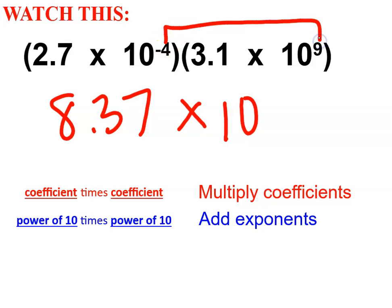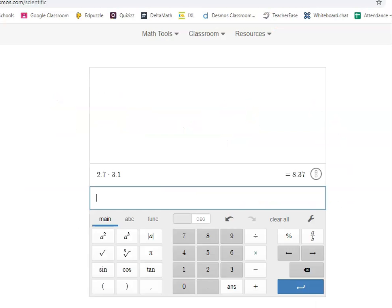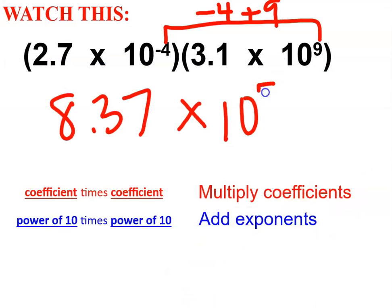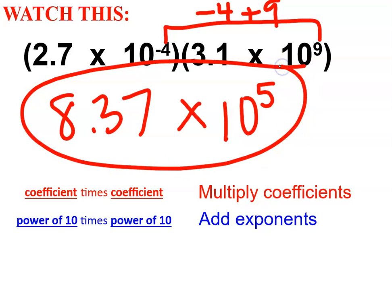Now this part can be tricky for some of you. When you are adding signed numbers, or positive and negative numbers, some of you have some trouble. So, just use your calculator. Negative 4 plus 9. On the Desmos calculator, the negative sign is the subtraction button. Negative 4 plus 9. No need to hurt your brain. Just use a calculator. The answer is 5. So, the power is positive 5. That's it.